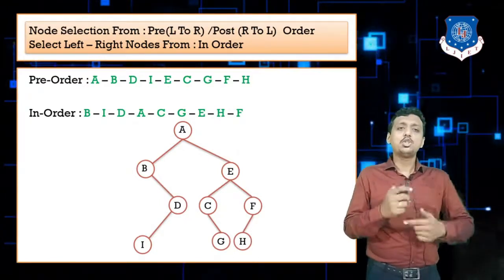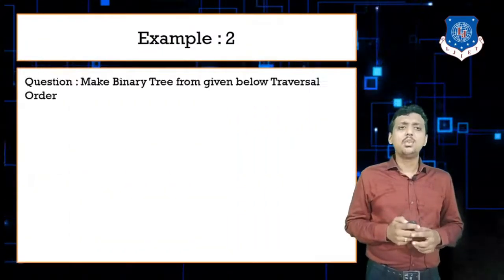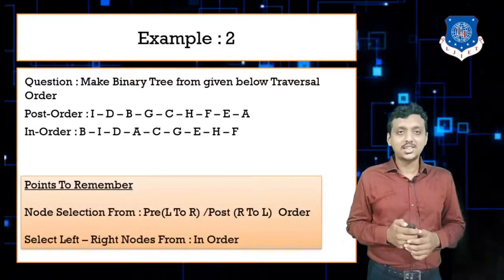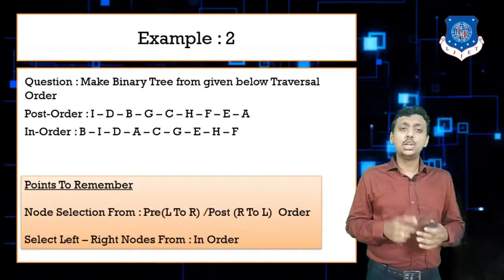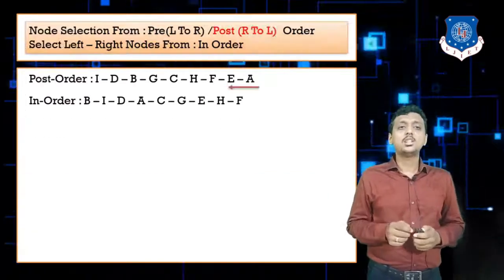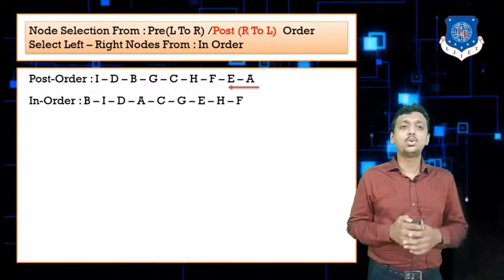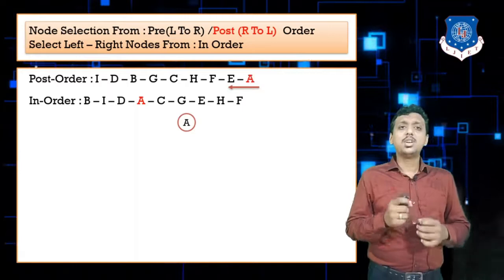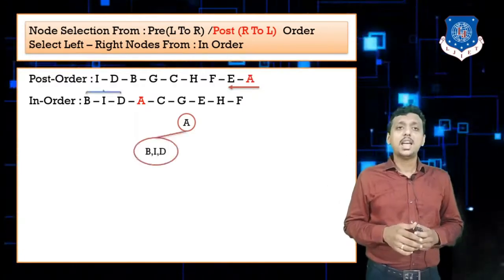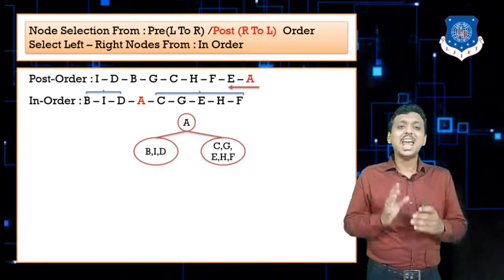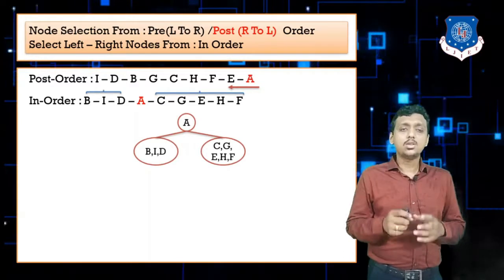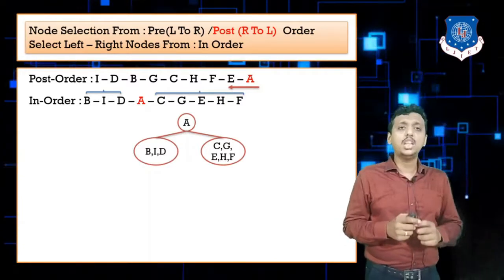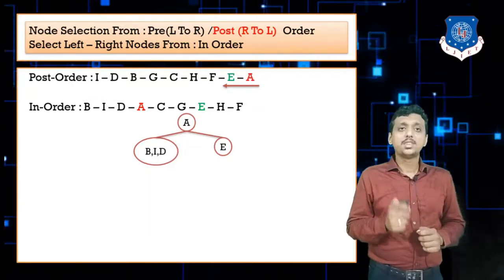Now let's look at Example 2: make a binary tree from the given post-order and in-order traversals. Since we have post-order, we go from right to left. The first node selected from right to left is A, which becomes the root. From in-order, B, I, D are on the left side of A and C, G, E, H, F are on the right.